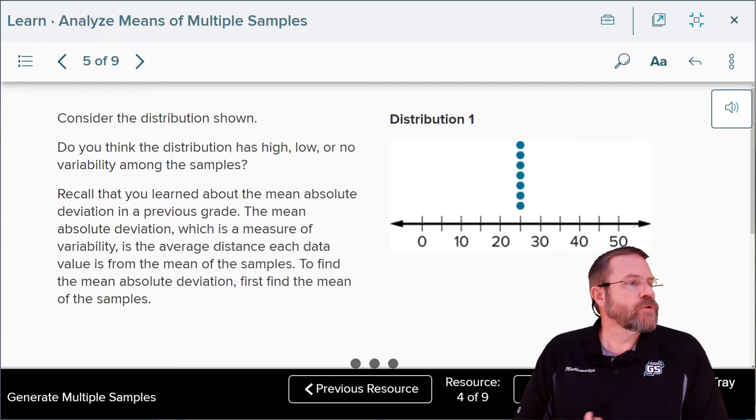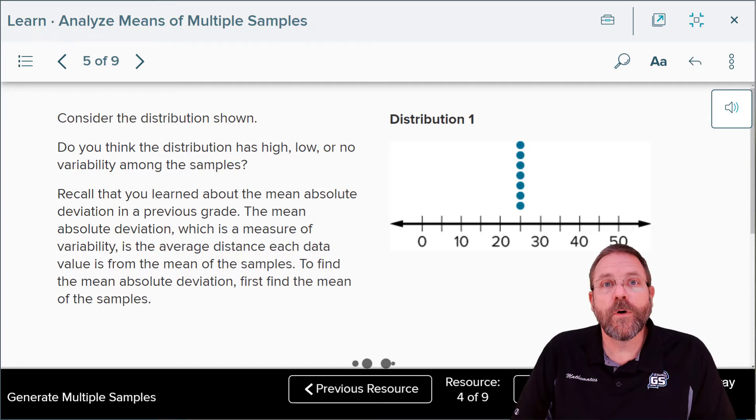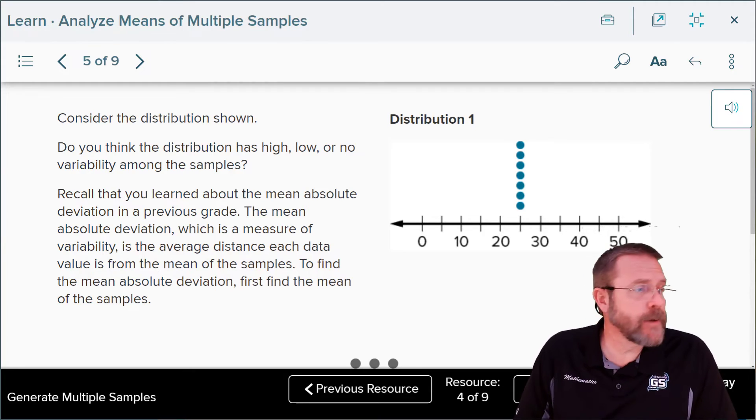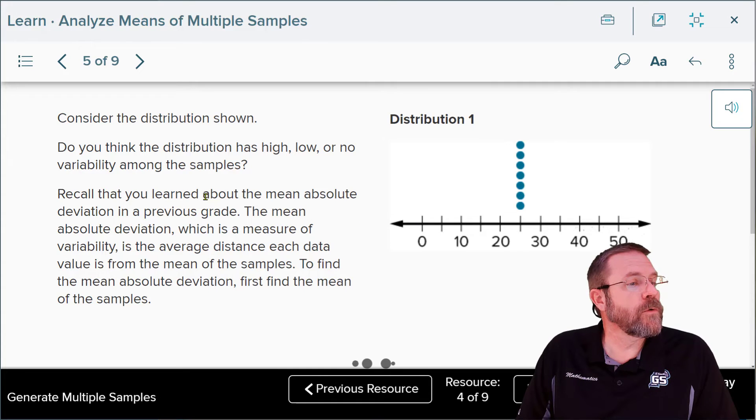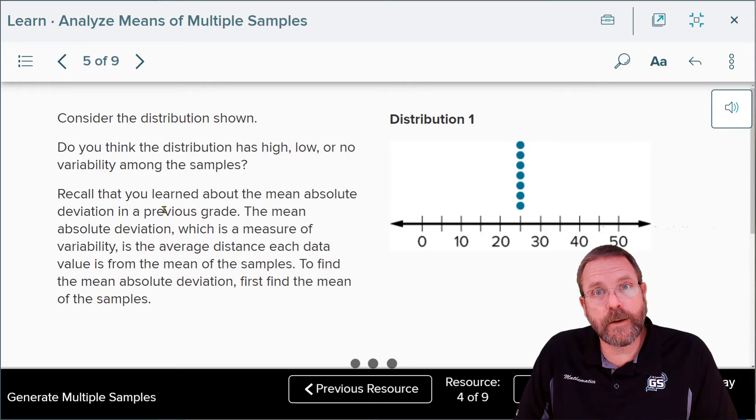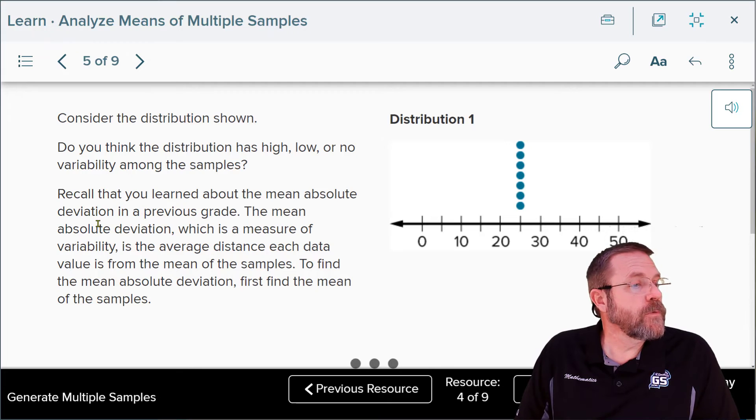Consider the distribution shown. Do you think that this distribution has a high, low, or no variability? I'm saying there is no variability because every single data point is right on the 15, which gives you very consistent data for sure. Recall that you learned about the mean absolute deviation in a previous grade. We also did that in, I think, the last lesson and it was really ugly.